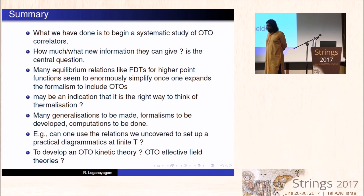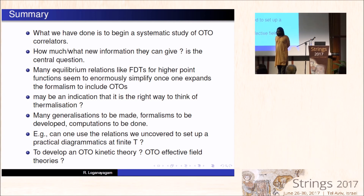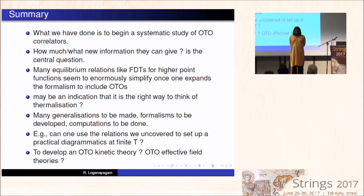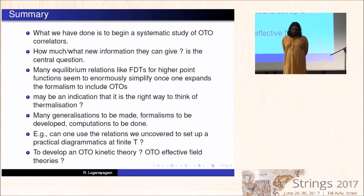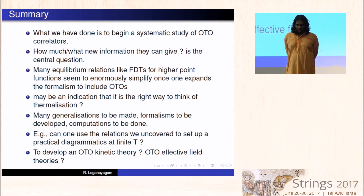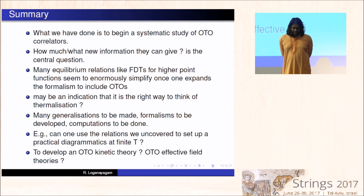Thank you very much for this very nice talk. Question: Are there any other special states beyond thermal states in which the number of independent out-of-time-ordered correlators is smaller? I would expect so, but I don't have a very good answer to that question. We are just looking at thermal states now. I think it is not known, but there should be. For example, for a general density matrix, you can do something like a modular Hamiltonian — many things that one says for thermal states can be repeated — but I have nothing more from that.